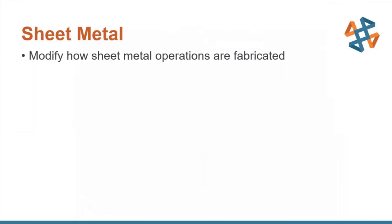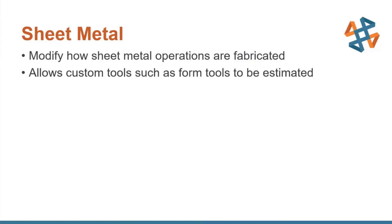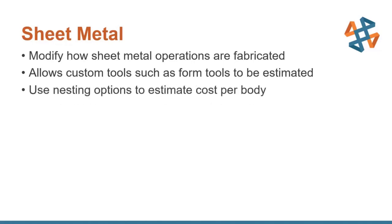For sheet metal, we're going to modify how sheet metal operations are fabricated and see how we can make overrides so the accuracy of the component is spot on. We'll also see how we can allow custom tools — such as form tools or library features — to be estimated within the sheet metal costing. And we'll see how nesting options come into play to estimate the cost per body of the sheet metal component.